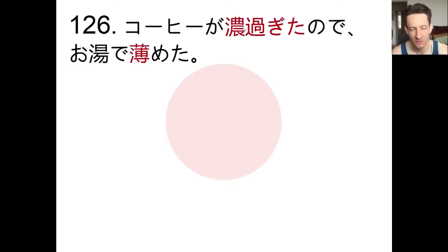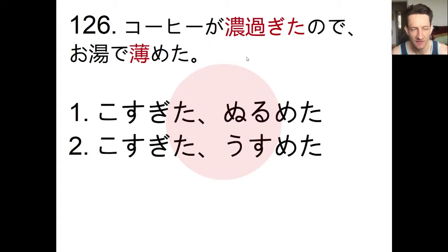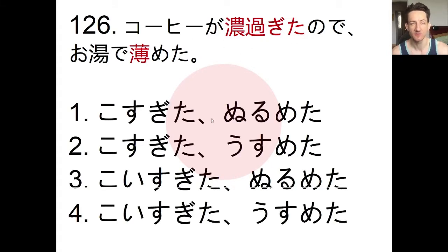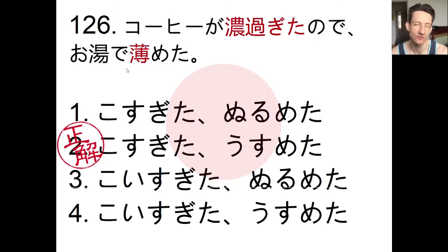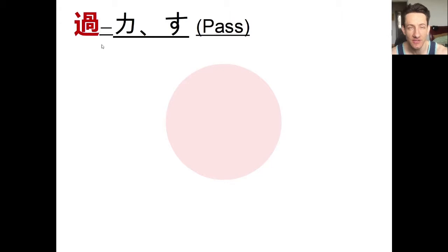Number 126: we have to choose the correct reading of the highlighted characters in the sentence. Read the sentence, read the answers, pause the video, choose an answer, and we'll check. The answer is 二番です. The sentence says コーヒーが濃すぎたので、お湯で薄めた — the coffee was too strong, so I added some water to make it a little thinner. Now we're going to take a closer look at the kanji character we see in 過ぎる, which means to pass, overtake, or go beyond some level.